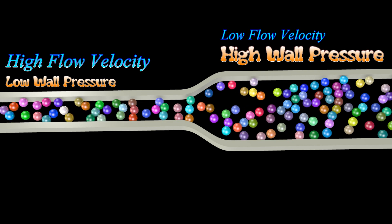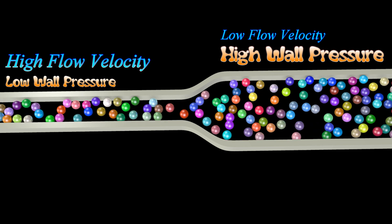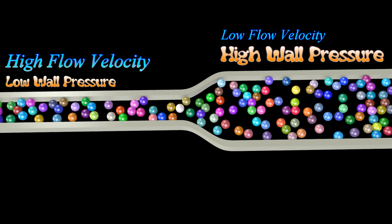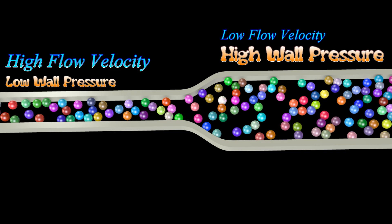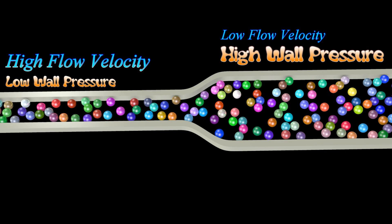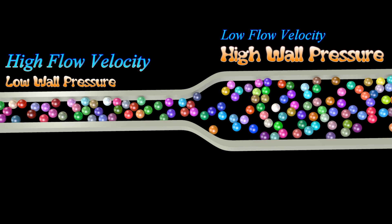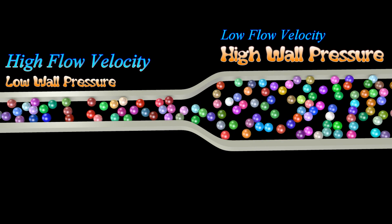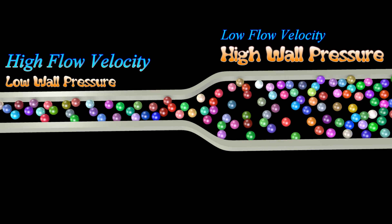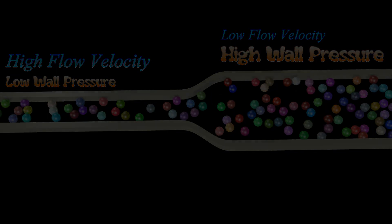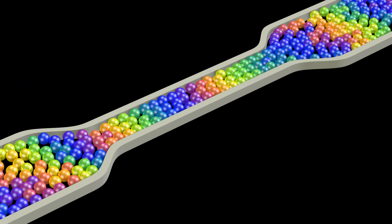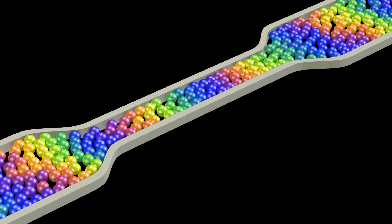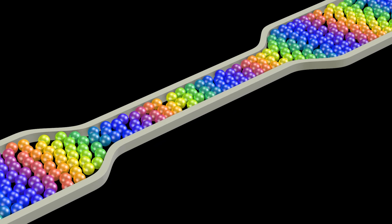The problem with these explanations is that there is no reason to expect an atom with a higher velocity to exert a lower pressure on the walls of the pipe. We should expect just the opposite of the Bernoulli principle, since an atom with a higher velocity would have a higher kinetic energy, and therefore exert a larger force on the pipe walls rather than a smaller one.